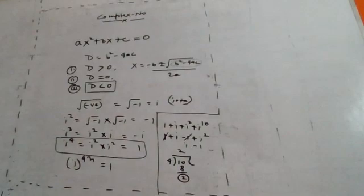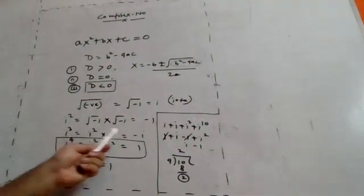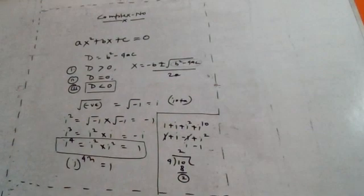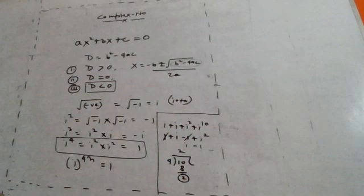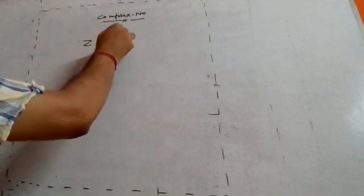This is where imaginary numbers start. When D is less than zero, we get a complex number. The root of a negative number involves i. So i is defined as √(-1). Now let's define a complex number: z is equal to x + iy.